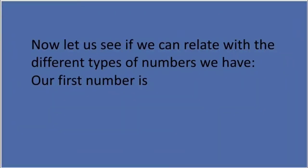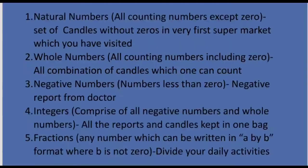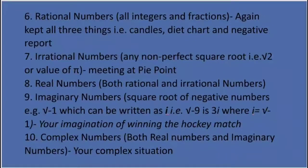Now let us see how this story gives us clues for the types of numbers. Natural numbers are all counting numbers except zero — the set of candles without zero from the first supermarket is your clue. Whole numbers are all counting numbers including zero — the full combination of candles you bought gives you that clue. Negative numbers come from your negative doctor's report, and integers are represented by all the reports and candles kept together in one bag.